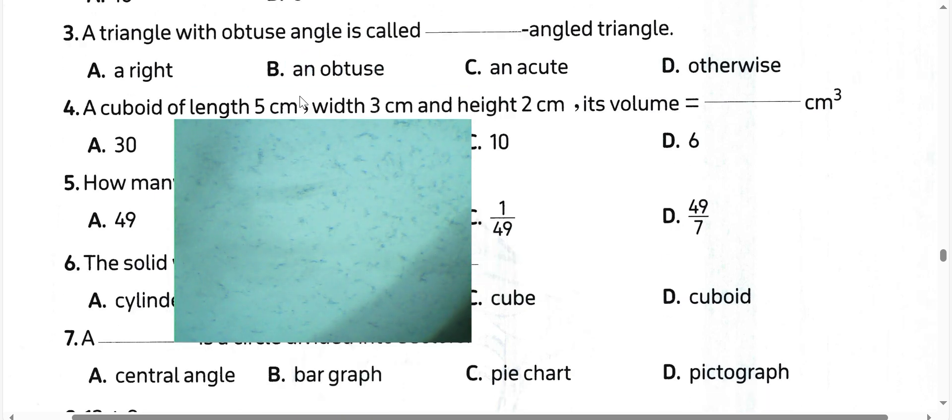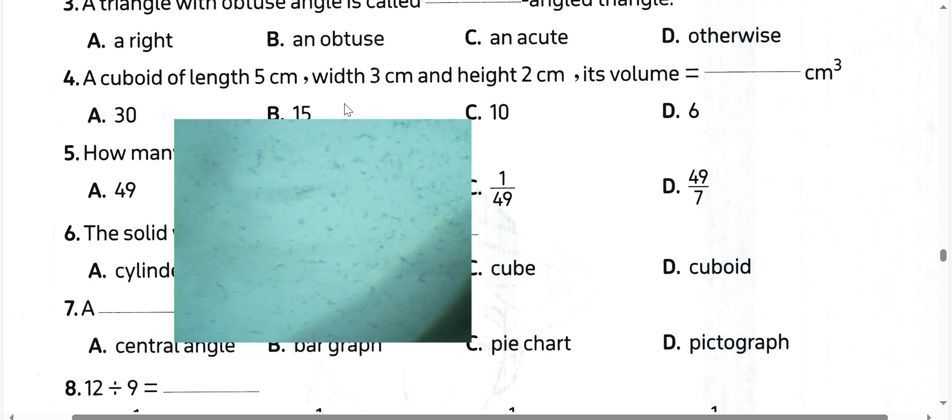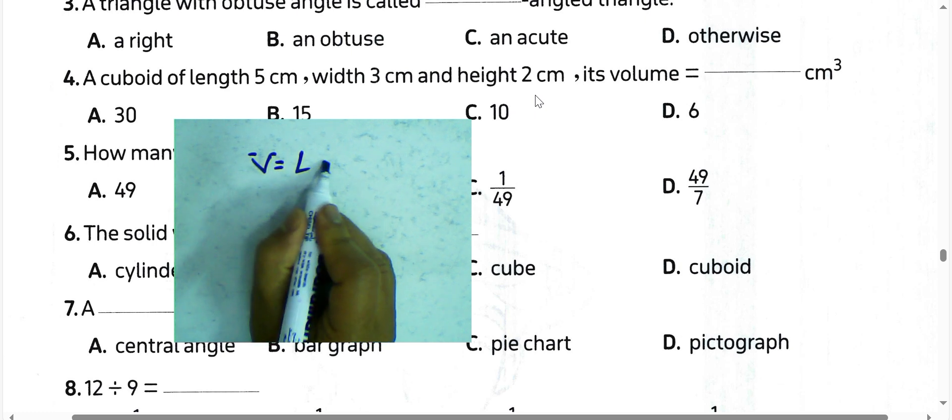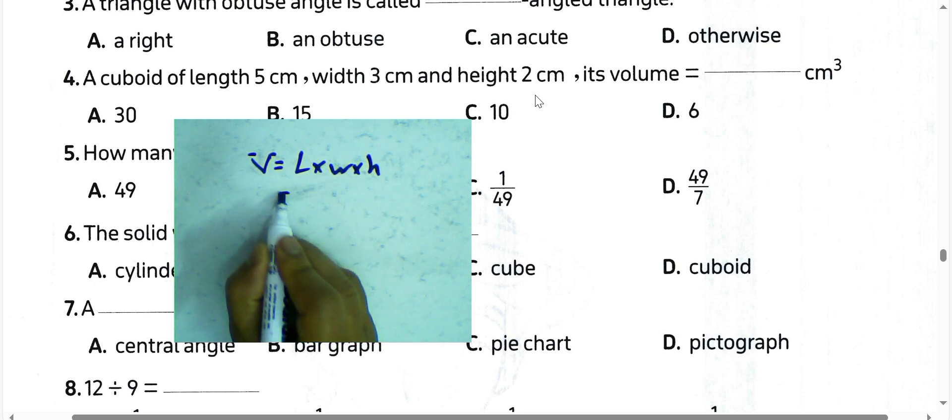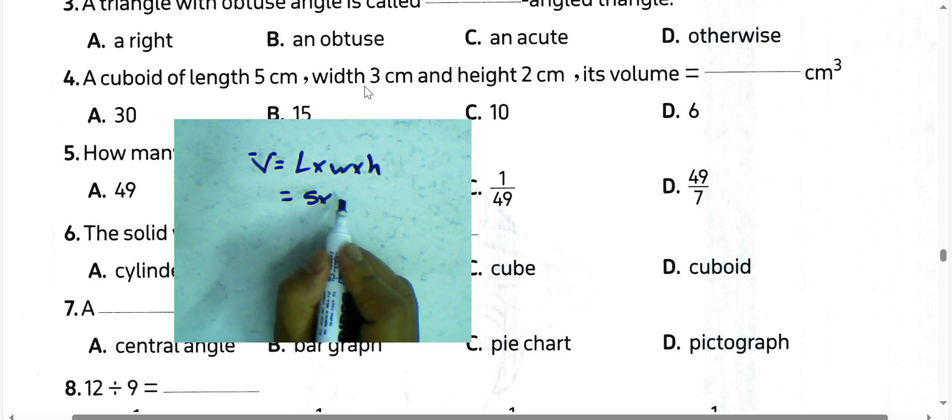Next question, a box of length 5 cm, width 3 cm, height 2 cm. We can find the volume equals length times width times height. 5 times 3 times 2 equals 30 cm³.